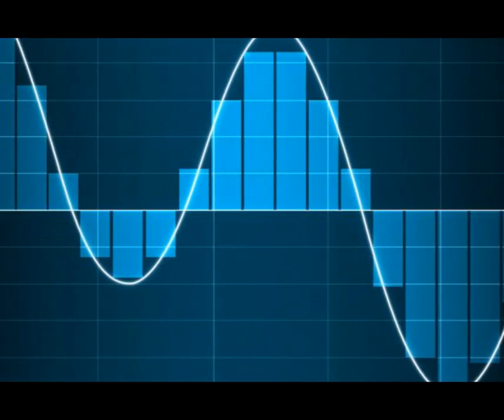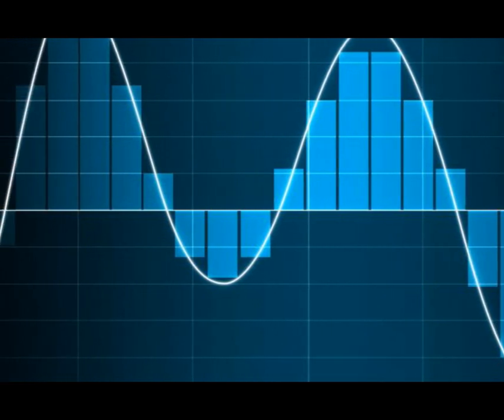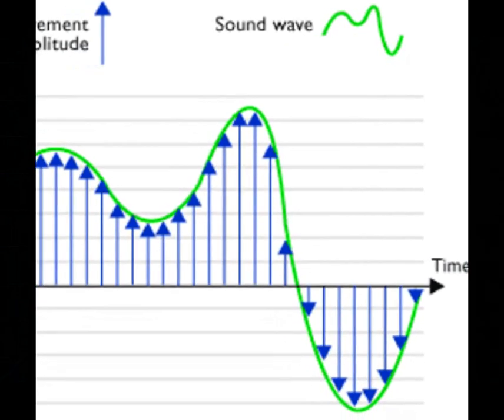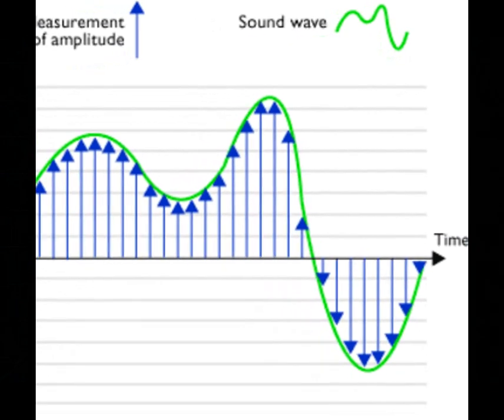In summary, an ADC converts continuous analog signals into discrete digital values by sampling, quantizing, encoding, and producing a digital output. The choice of ADC type and resolution depends on the specific needs of the application.